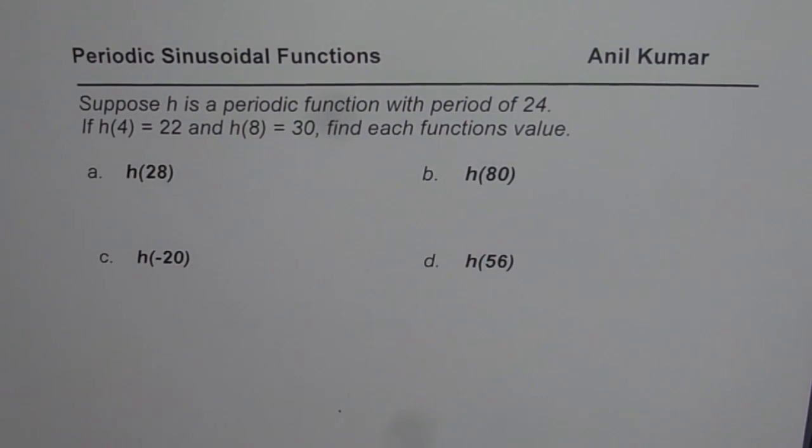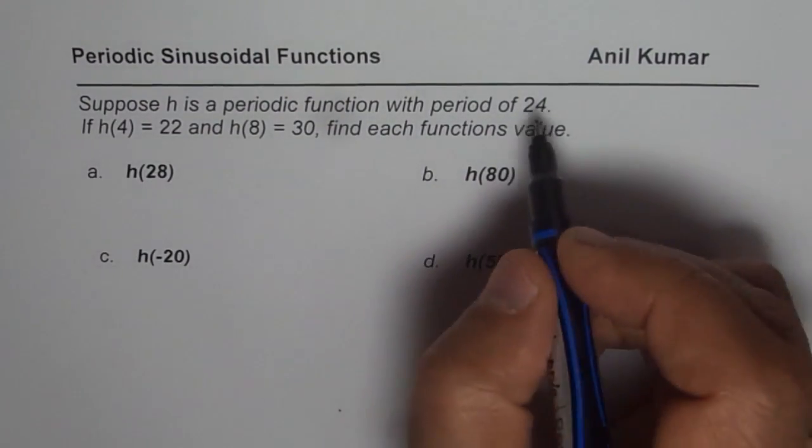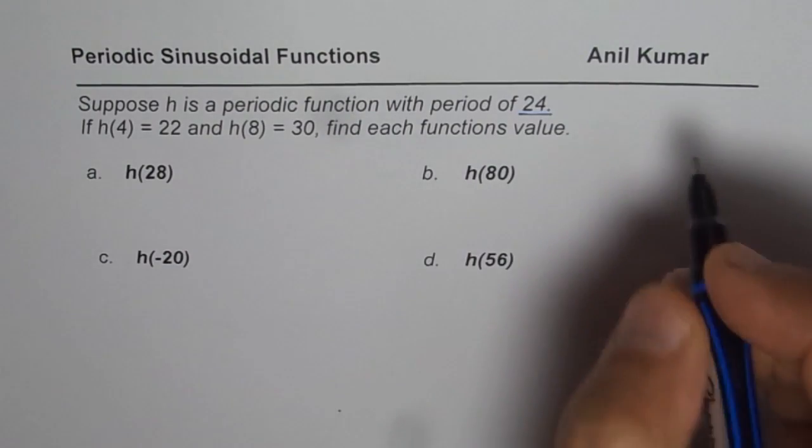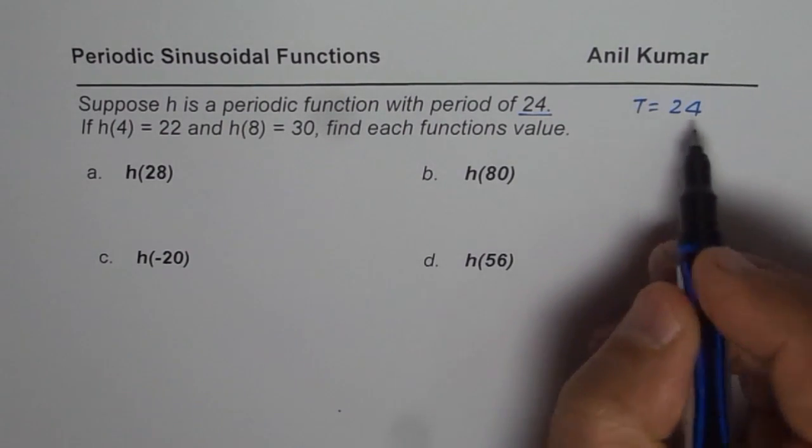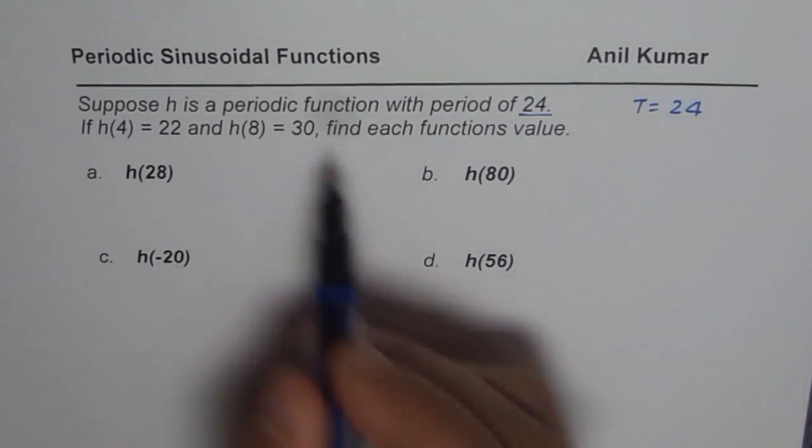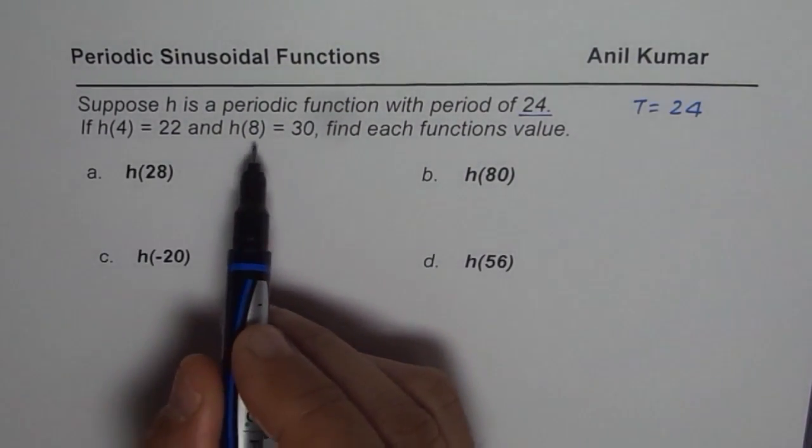My suggestion is that if you're looking for a periodic function, that means the values repeat after the period and we know the time period T equals 24. So after every 24, these values are going to repeat. We are given two values for this particular function, H(4) and H(8).